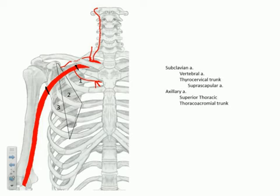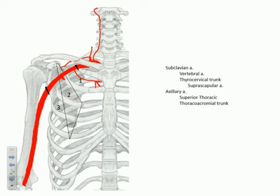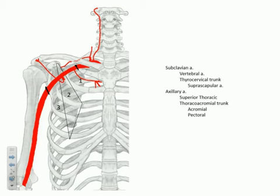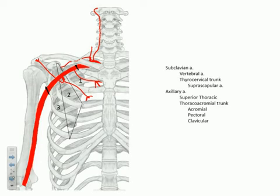Moving into segment two, we see two branches come off. The first is actually a trunk called the thoracoacromial trunk, which gives off a total of four branches. First is the acromial branch, which projects laterally toward the acromion. Second is the pectoral branch, which travels just inferior to the superior thoracic and supplies blood to pectoralis major and minor. Third is the clavicular branch, which hooks back up to supply structures around the clavicle.